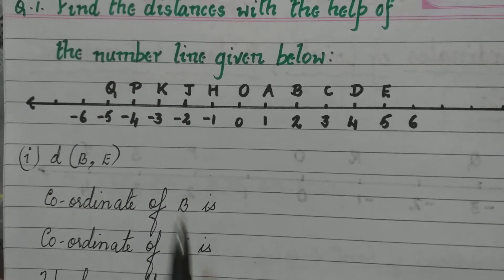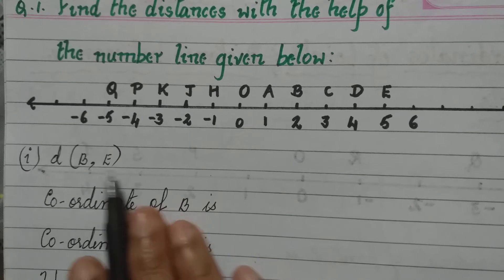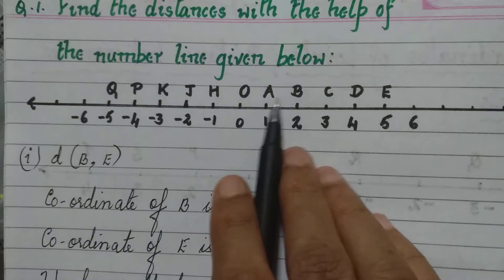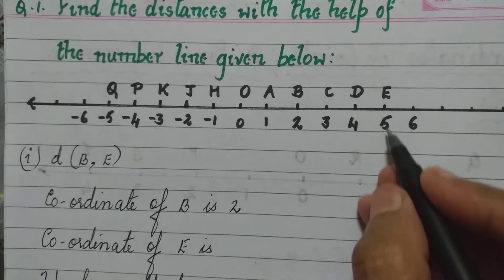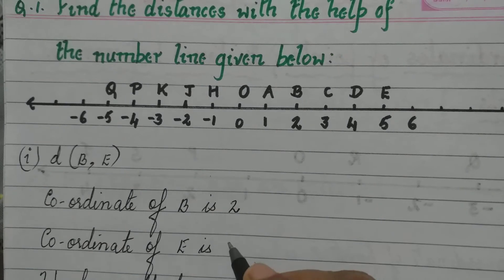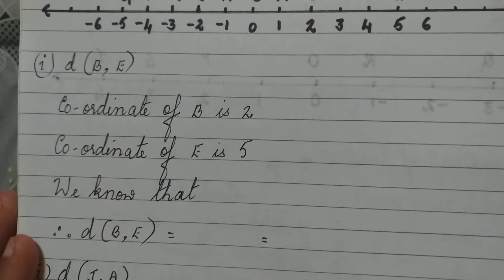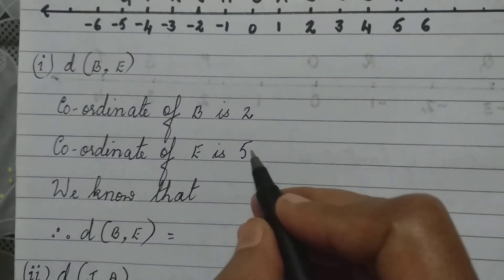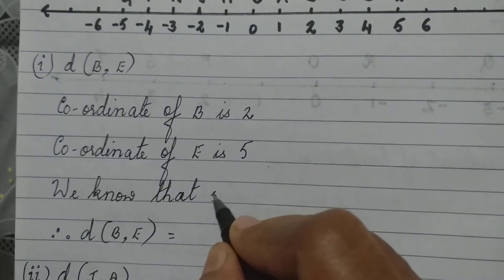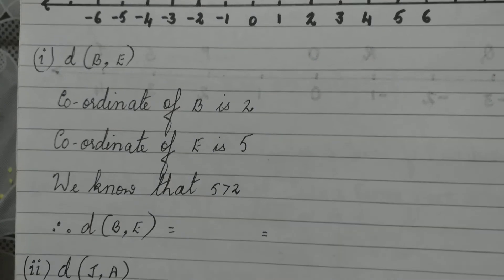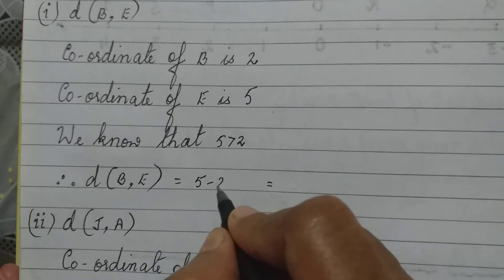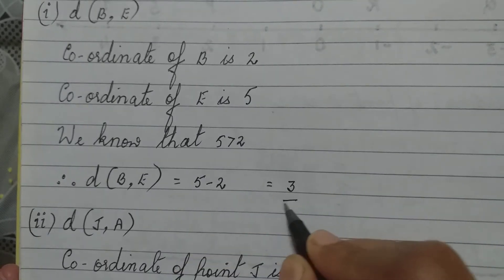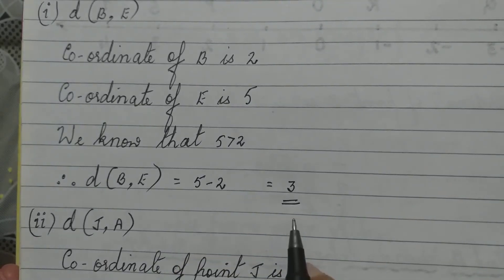First question: find the distance between the points B and E. The coordinate of point B is 2, and the coordinate of point E is 5. We have to see which is greater — 5 is greater than 2. So the distance between points B and E is 5 minus 2, which is 3.